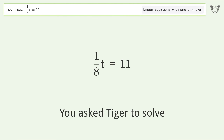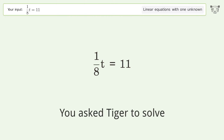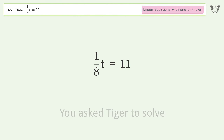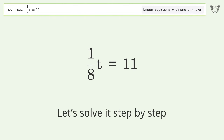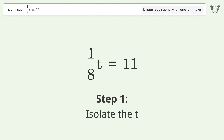You asked Tiger to solve this — it deals with linear equations with one unknown. The final result is t equals 88. Let's solve it step by step and isolate the t.